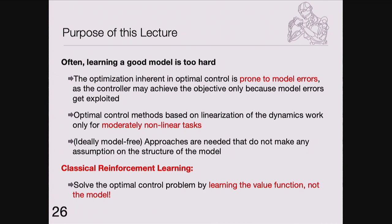Model-free approaches have the advantage that they don't need assumptions about model structure. This is classical reinforcement learning: learn the value function, not the model. Rich Sutton up to around 2005 would hate anybody who used a model, then changed his view after some research results — the jury is still out. It really depends on how well your model can learn and how we cope with model bias. For model-free RL, we need to go for infinite horizon, requiring a discount factor strictly less than one for stationary solutions.